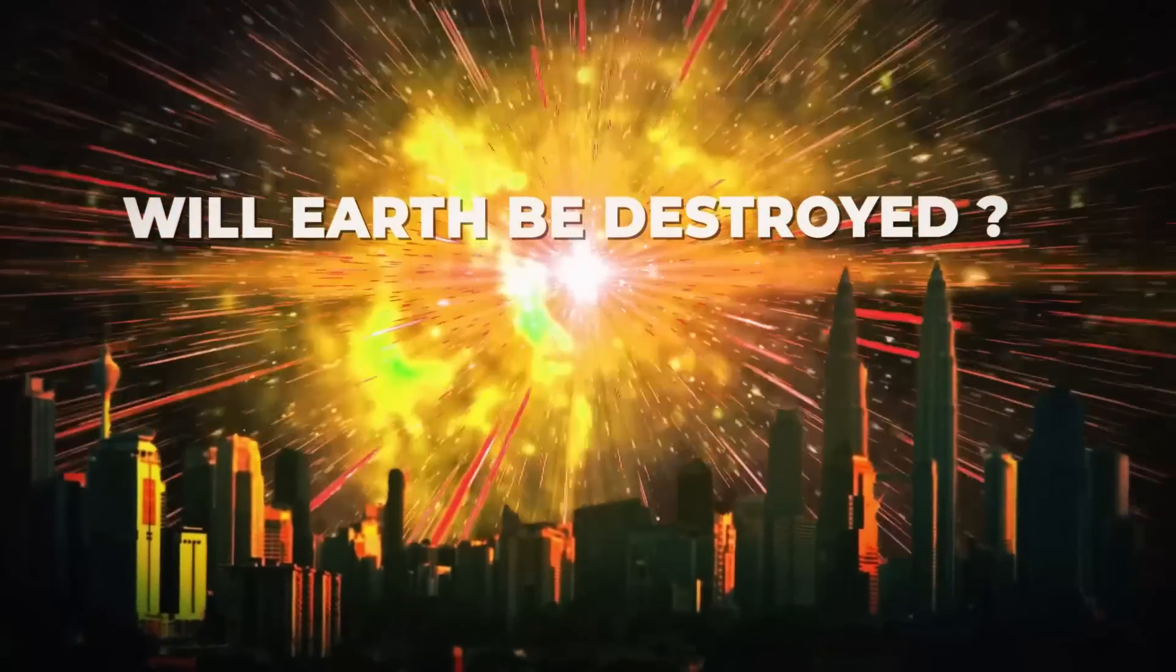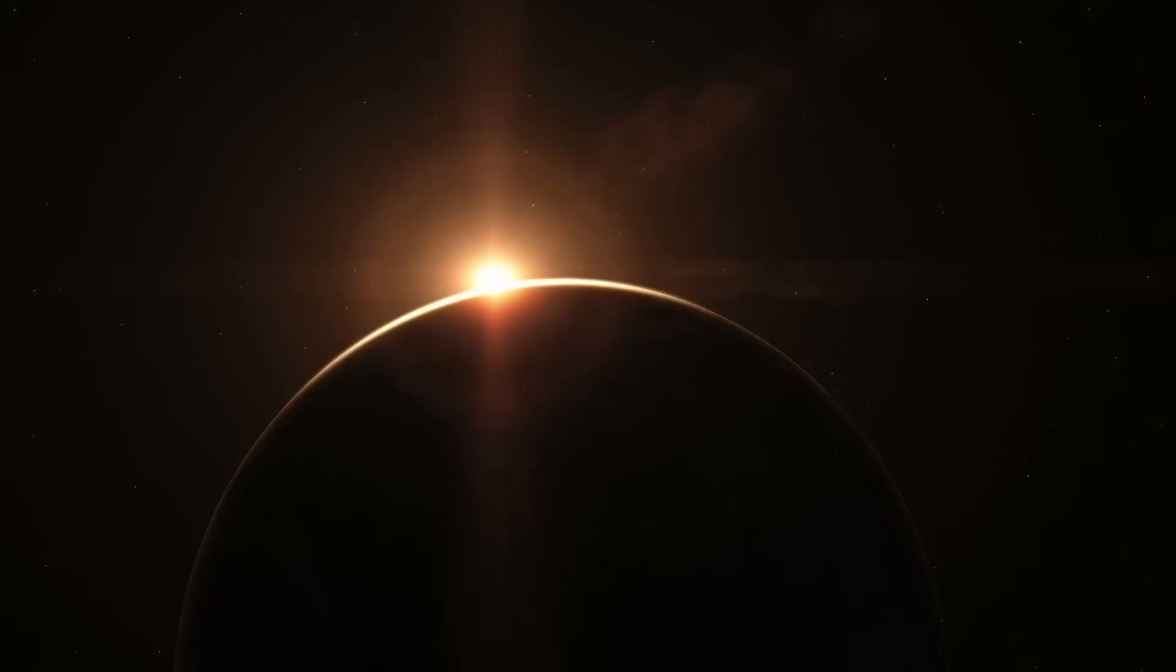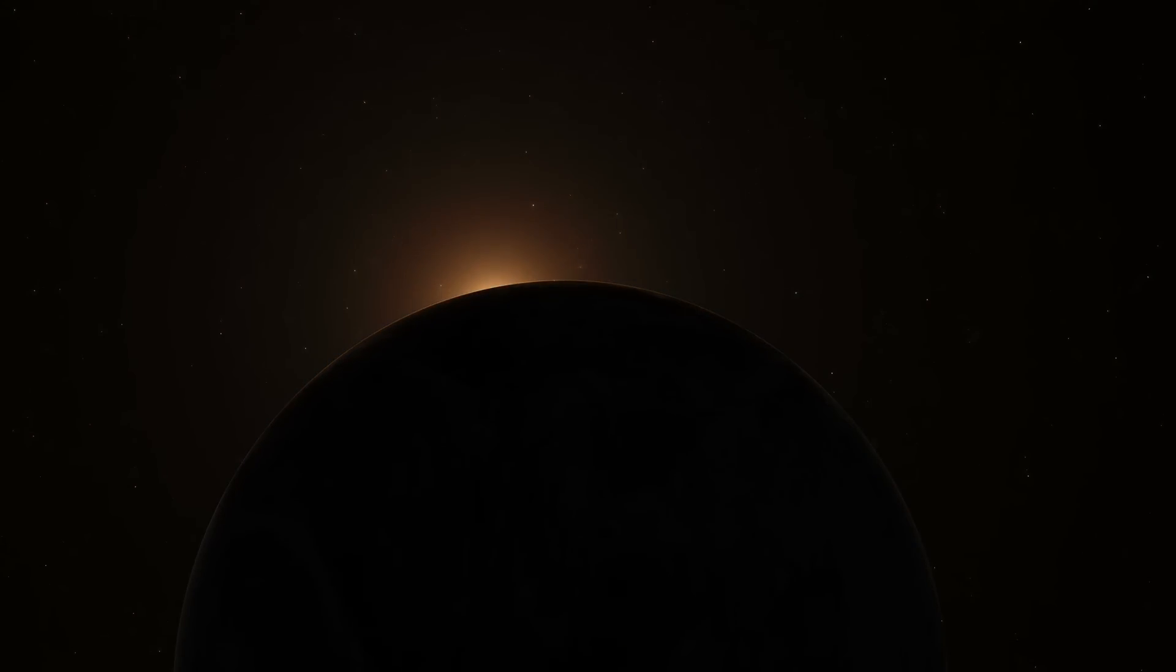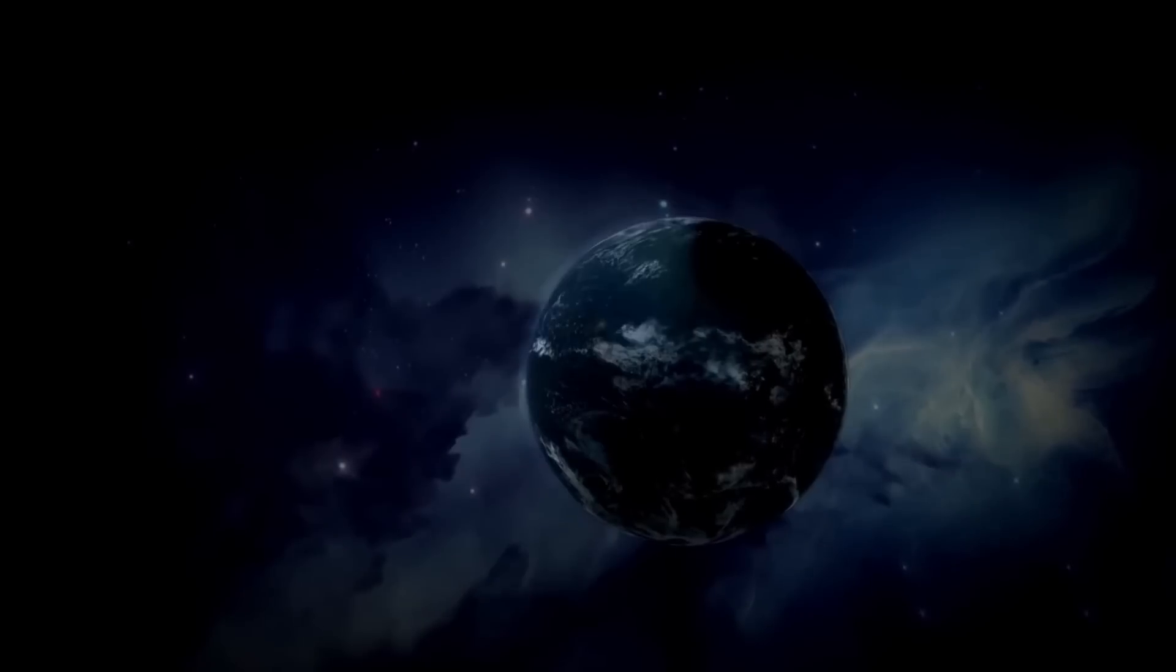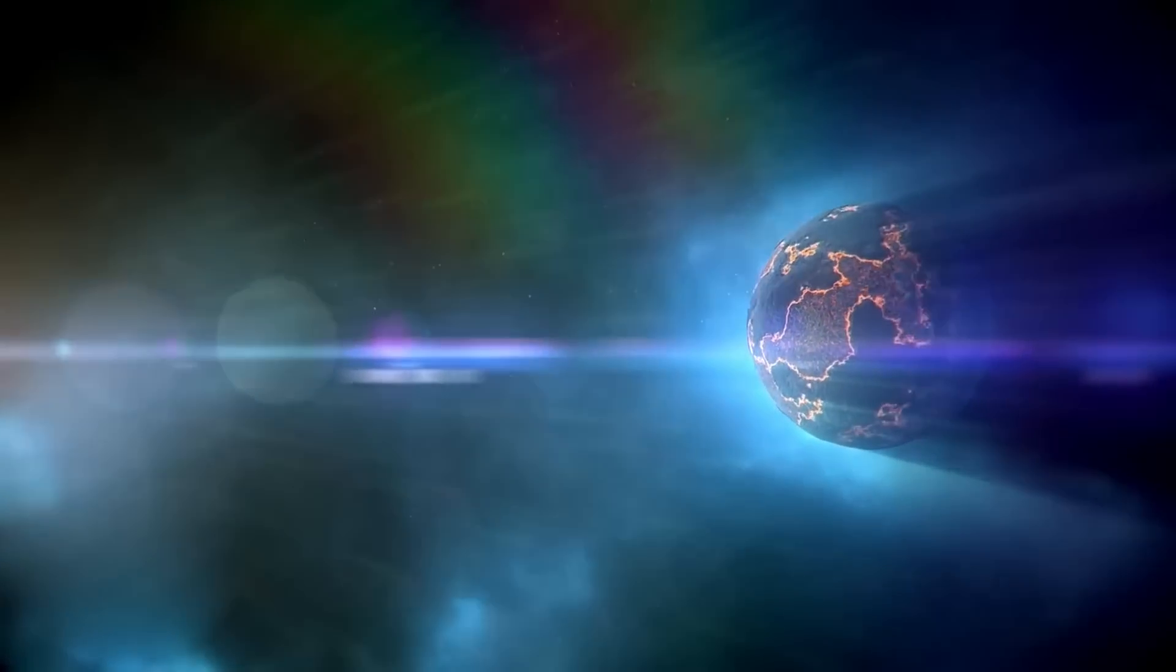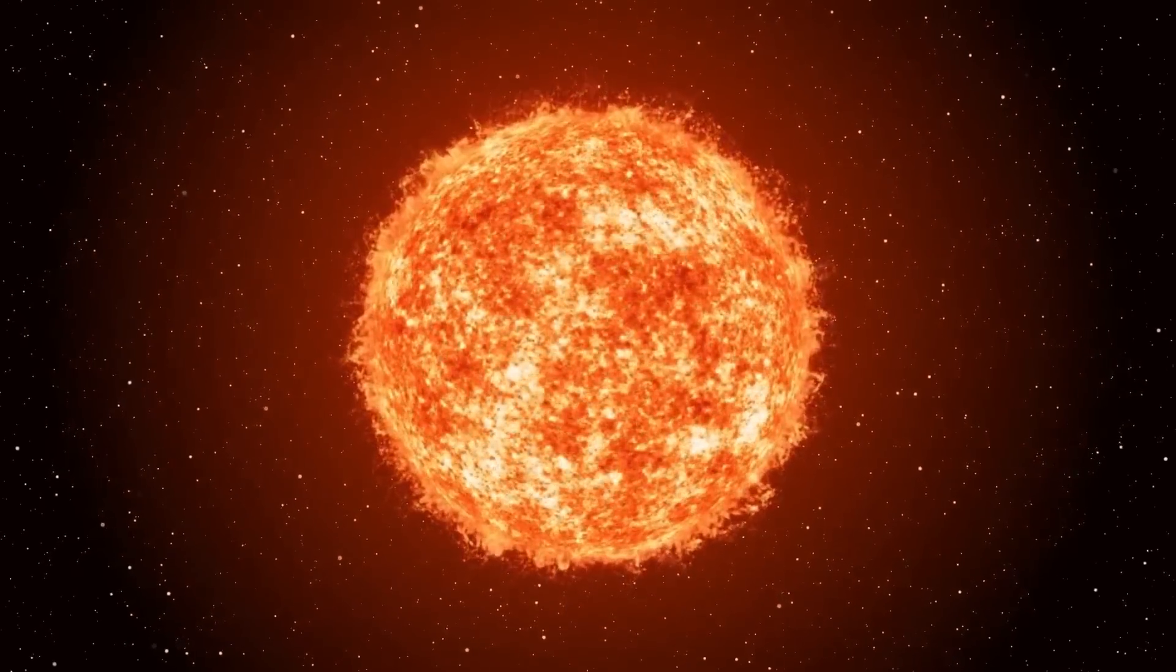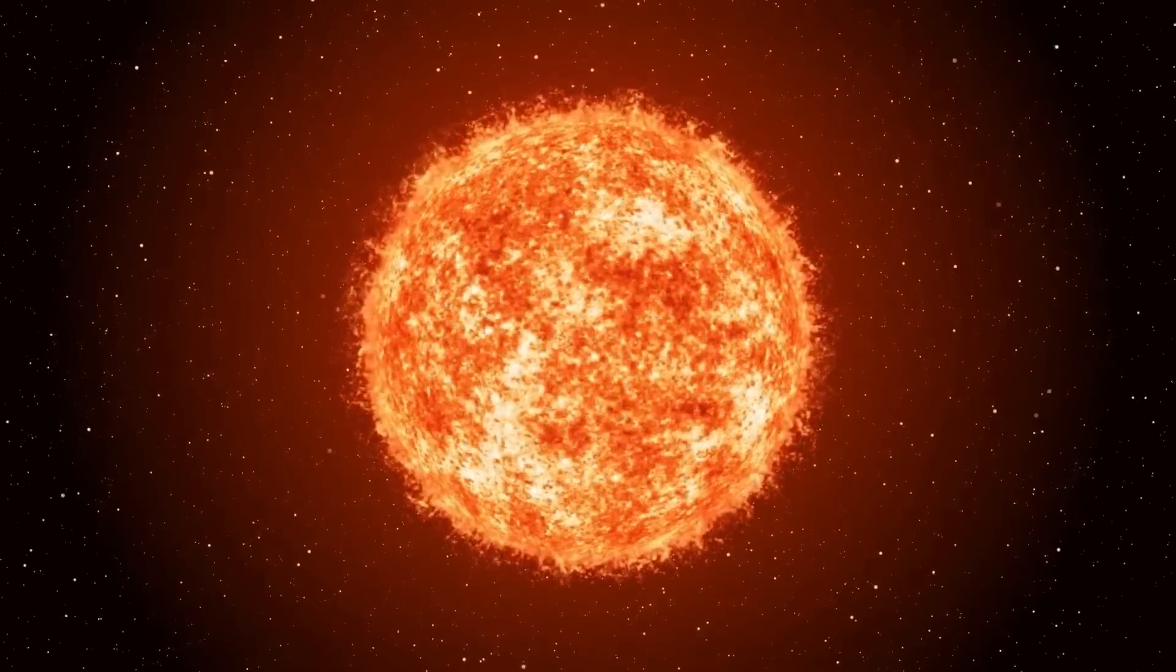Will Earth be destroyed by the Betelgeuse supernova? No. The explosion of Betelgeuse won't affect or partially end life on Earth, because it will occur too distant from the planet. Astronomers estimate that for a supernova to be dangerous to humans, we would need to be 50 light-years distant from it. Also, Betelgeuse is over 10 times farther away, as we well know.